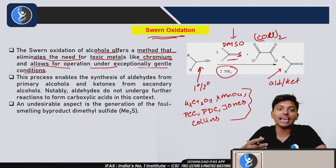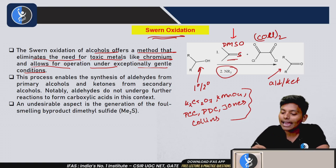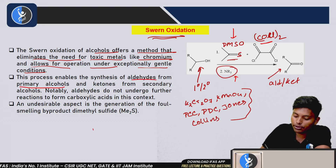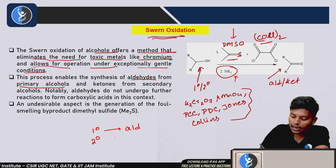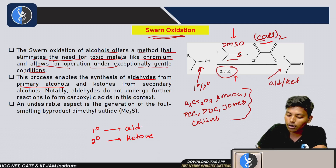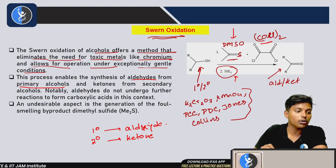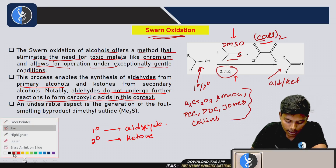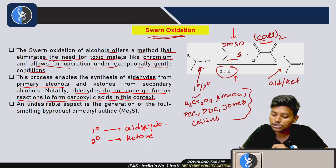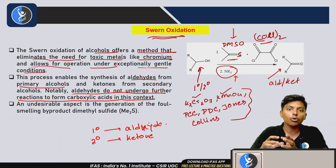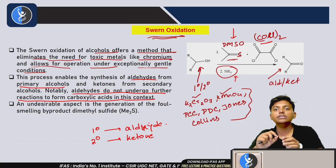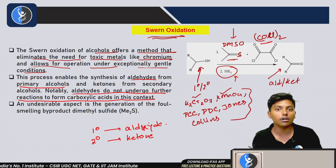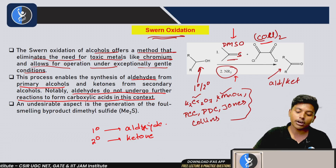In this reaction we use DMSO, which has a high boiling point, and we use COCl₂, followed by an amine base. This process enables the synthesis of aldehydes from primary alcohols and ketones from secondary alcohols. Notably, aldehydes do not undergo further oxidation to form carboxylic acid. With reagents like K₂Cr₂O₇ or KMnO₄, over-oxidation occurs converting alcohols all the way to carboxylic acids, but with Swern Oxidation we can stop at the aldehyde stage.